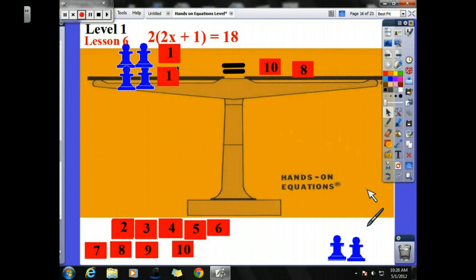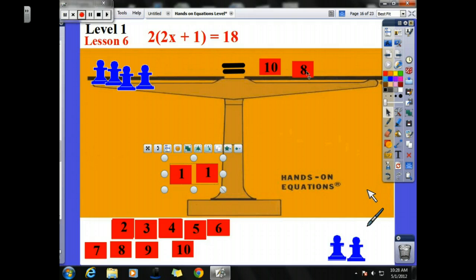All right, now the fun begins. I have no pawns to take away. That means I only have 4 over here. I don't have any pawns over here, so I can only take away my numbers. I have these 2. So I subtract 2 from this side, and I subtract 2 from this side. And 18 minus 2 is 16.